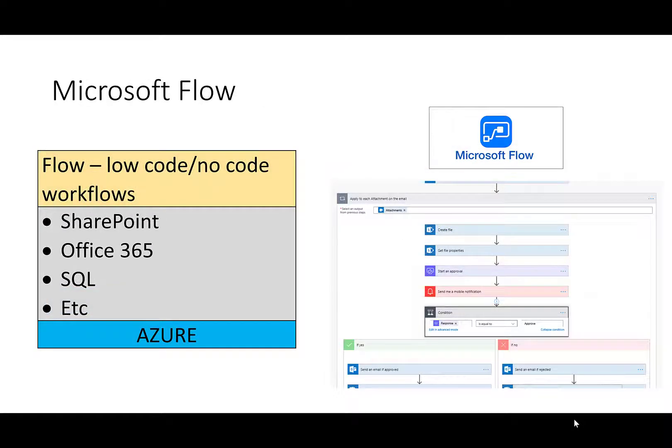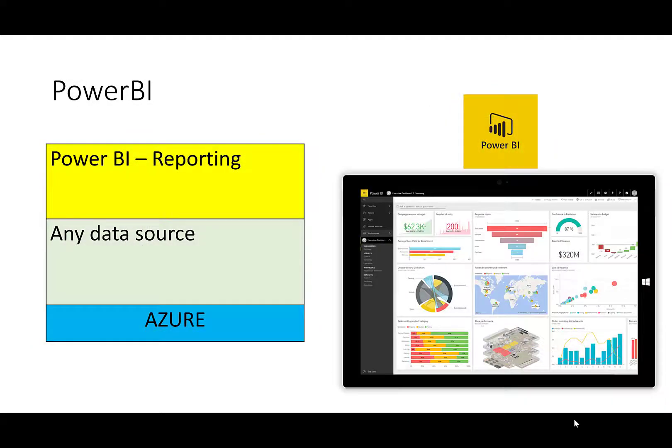There was also Microsoft Flow — in another lab — which was a way to do low-code, no-code workflows. It handled orchestration: getting different applications talking to each other and automating mundane and administrative tasks. Again, it could tie into SharePoint, Office 365, SQL, Dynamics CRM, and other platforms. In terms of reporting, there was Power BI, which originally came out of the SQL Server group — a tool to tie to different data sources and create powerful dashboards and visual analytics around your data.